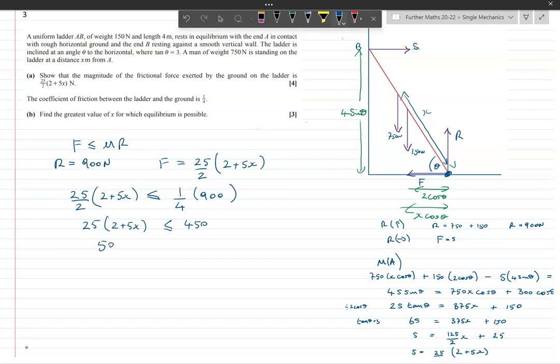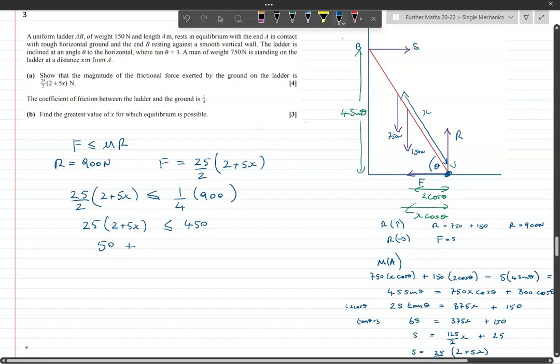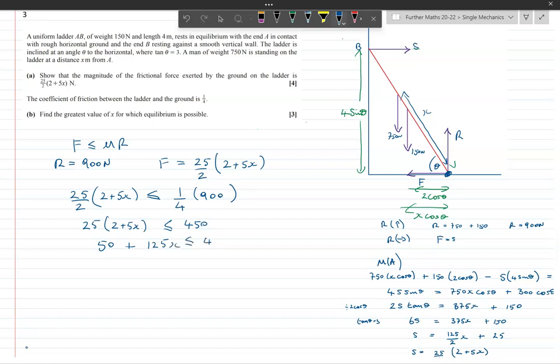So then I've got 50 plus 125x is less than or equal to 450, so 125x is less than or equal to 400. So x is going to be less than or equal to 400 over 125, which simplified is 16 over 5.